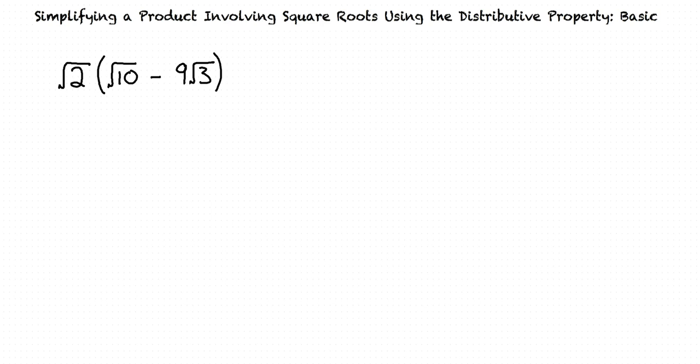Consider the example problem: multiply the square root of 2 by the square root of 10 minus 9 times the square root of 3, and simplify your answer as much as possible.